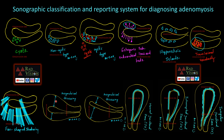Sometimes you can see fan-shaped shadowing in the anterior or posterior myometrium. There may also be asymmetrical thickening of the myometrium — here is asymmetrical anterior wall thickening, and here is asymmetrical posterior wall thickening. This is the normal junctional zone, this is an interrupted junctional zone, and this is an irregular junctional zone. These are all the MOUSSA features used in describing adenomyosis lesions.